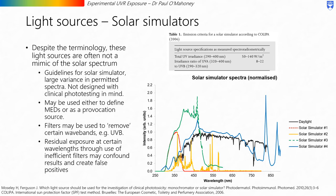Another type of light source is the solar simulator, which are typically broadband light sources. Despite the terminology, these light sources are often not a mimic of the solar spectrum, as is evident in the graph shown. There are guidelines for solar simulators, but they do permit a large variance in the spectrum and were not specifically designed with clinical phototesting in mind — as the reference shown indicates, the guidelines were designed with SPF measurement in mind. These light sources may be used to define MEDs or as a provocation source; however, the MED determined will be specific to that light source. Filters may sometimes be used to remove certain wavebands, for example UVB, although residual exposure at certain wavelengths through the use of inefficient filters may confound results and create false positives. This is a reminder to always look at both the spectral irradiance and the logarithmic spectral irradiance.